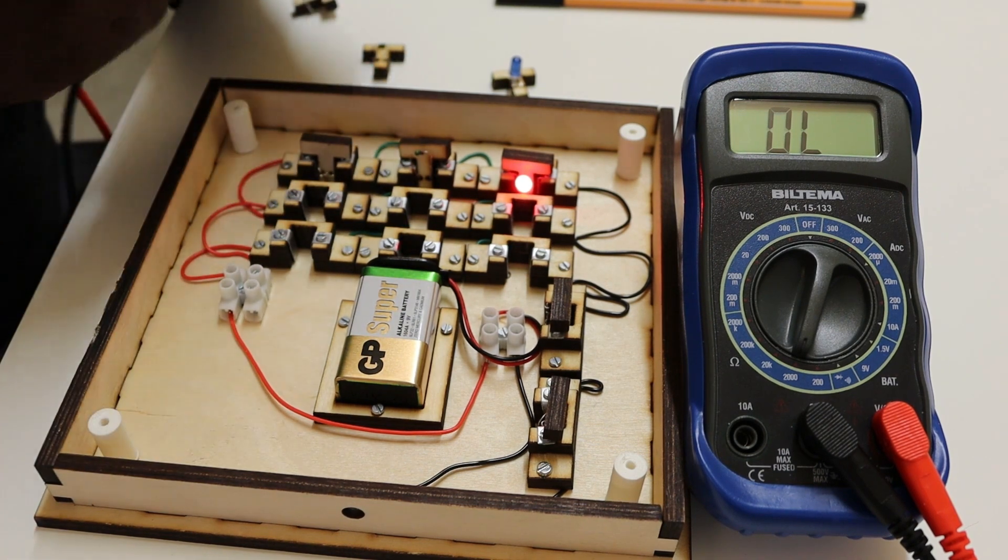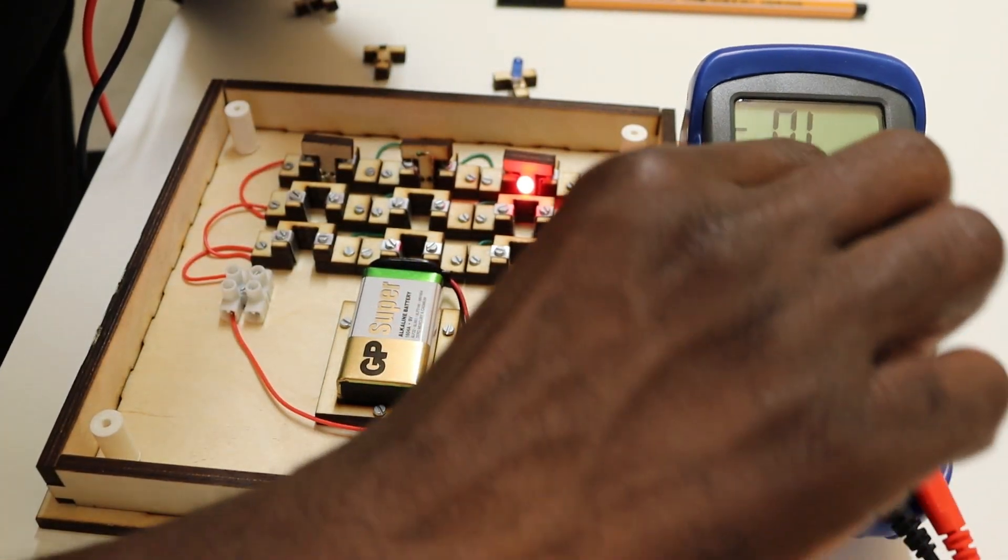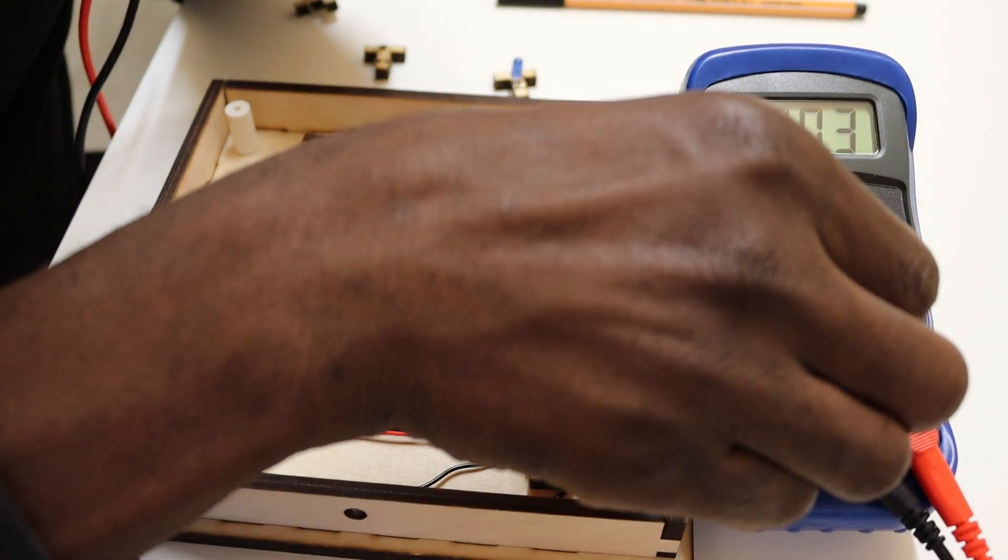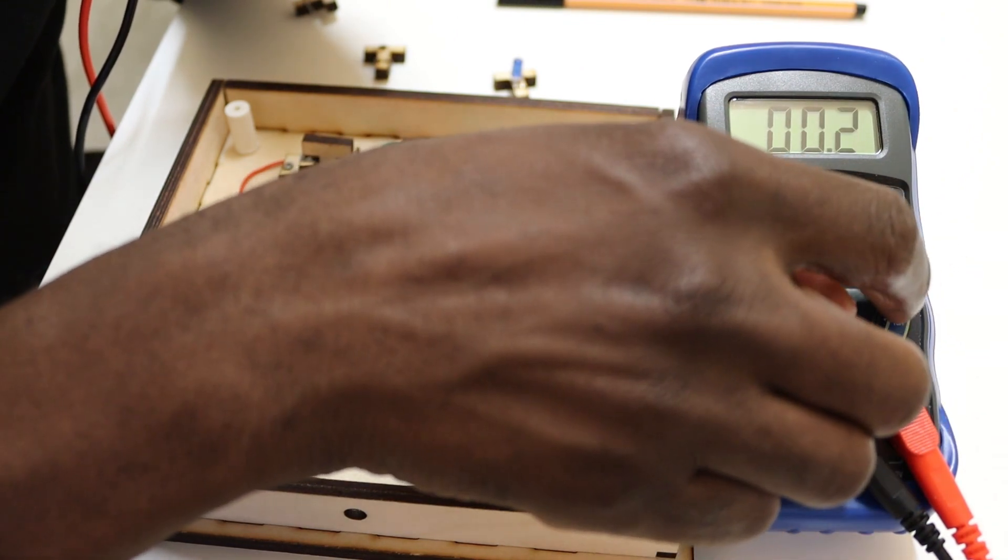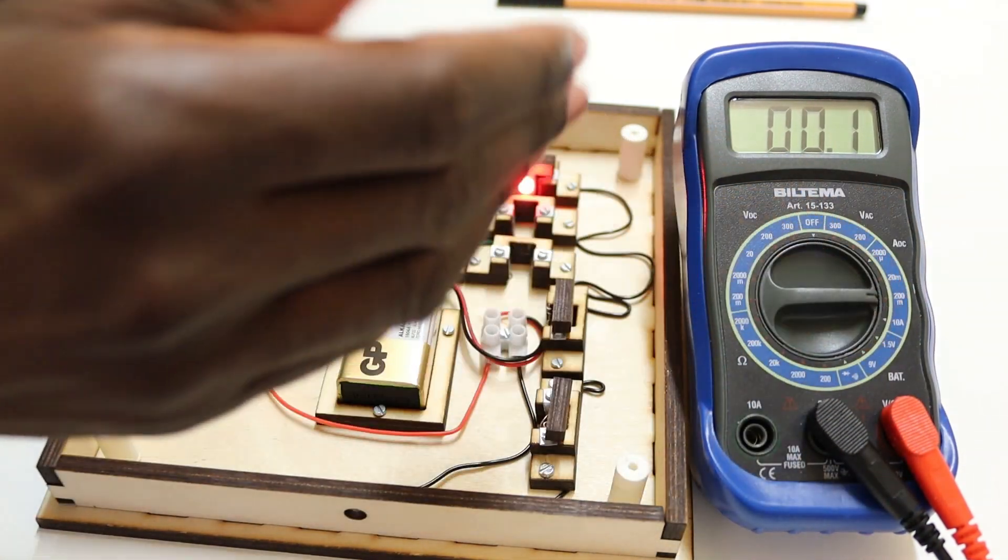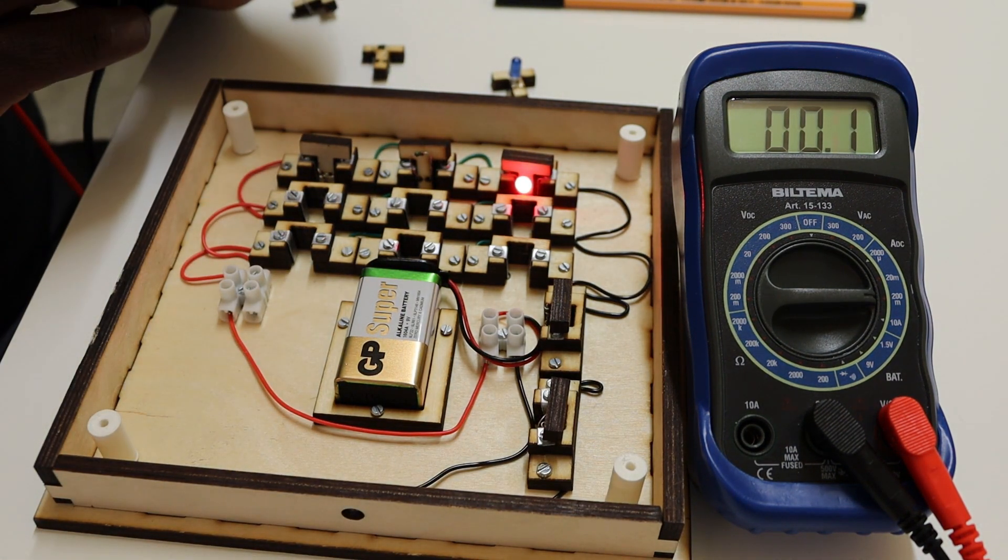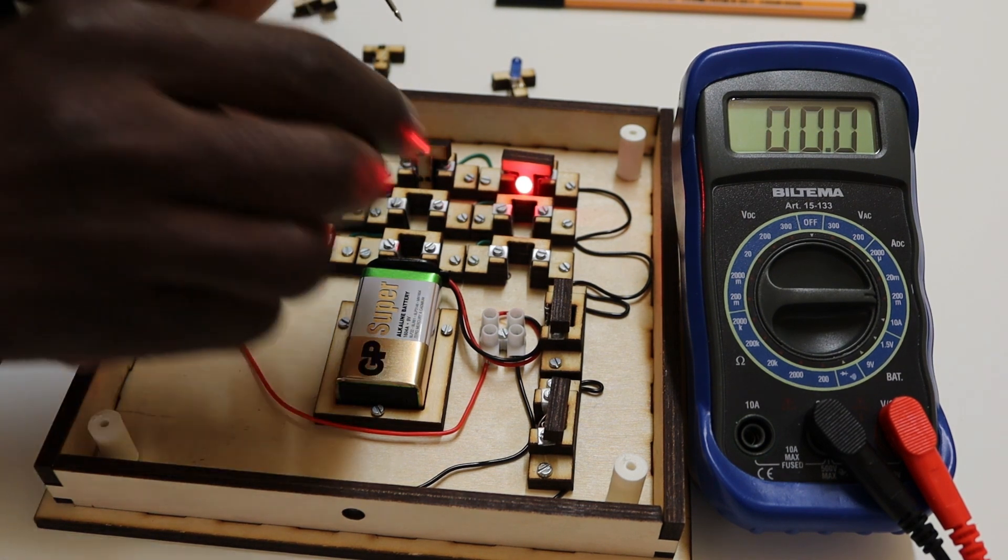In terms of current, things are different. We put the meter in series. If you want to measure current, we know our current should be 20 milliamps. Let's go to 20 milliamps. You have to place the meter at a higher value, so 200 milliamps. And now if we want to measure current, it has to be in series with the circuit.